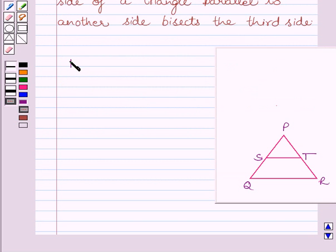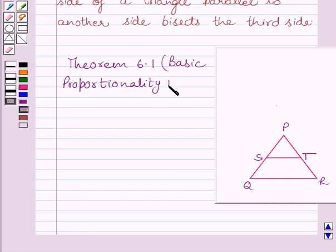First of all, let us understand theorem 6.1. Theorem 6.1 is also known as basic proportionality theorem. It states that if a line is drawn parallel to one side of a triangle intersecting other two sides in distinct points, then the other two sides are divided in the same ratio.